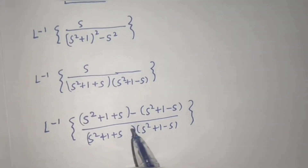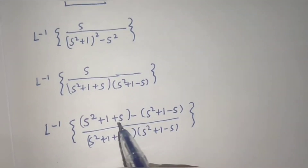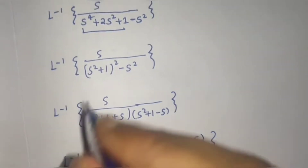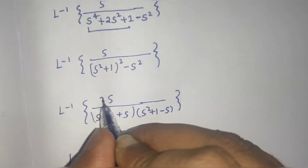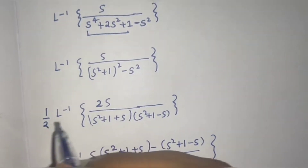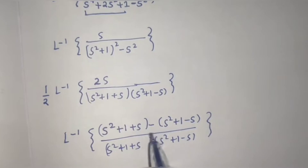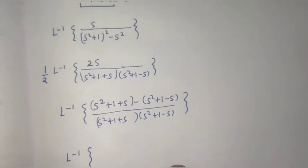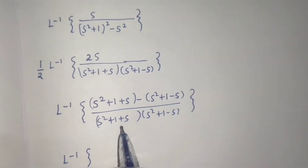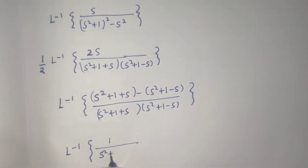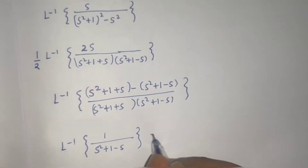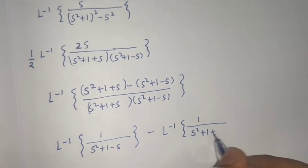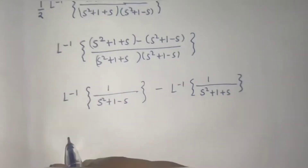So S squared plus S squared cancel, and S plus S gives 2S. Initially I had just S, so I am just multiplying and dividing by 2. Now I have 2S, so I can now separate this out. This divided by the denominator leaves me with 1 upon S squared plus 1 minus S, minus the Laplace inverse of 1 upon S squared plus 1 plus S.